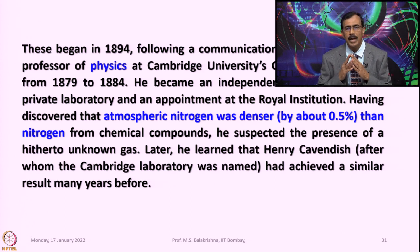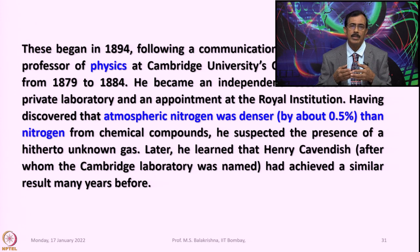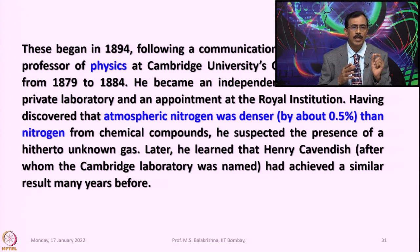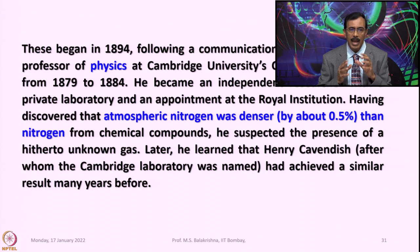That means when you separate nitrogen from the atmosphere and look into its density, and when you generate nitrogen in a laboratory, the nitrogen generated in the laboratory was less dense by 0.5 percent. So he suspected the presence of a hitherto unknown gas — that the atmospheric nitrogen, so-called, had some other component that was identified during that time.